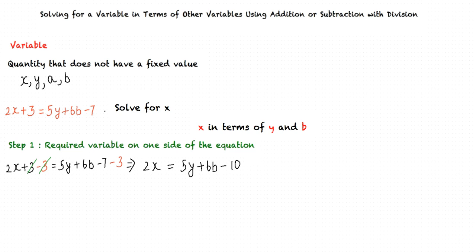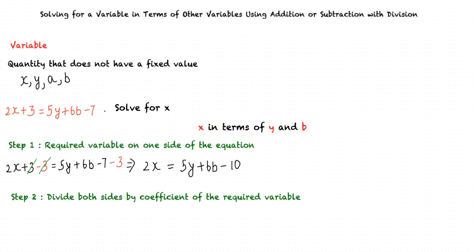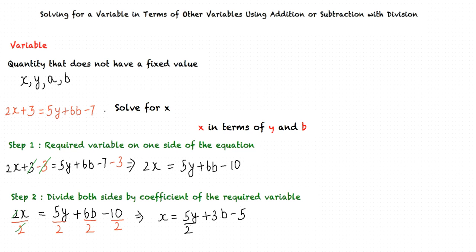We get 2x equals 5y plus 6b minus 10. We are required to solve for x but we have 2x in the equation. The final step is to divide both sides by the coefficient of the required variable. Here, we divide by 2 on both sides, and dividing by 2, we get x equals 5y over 2 plus 3b minus 5.